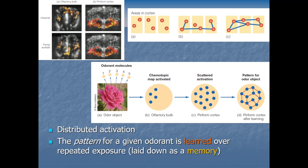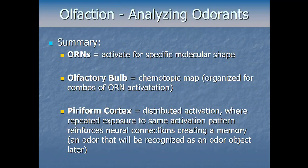If you smell something for the first time, you'll have a perceptual experience but won't be able to identify it — the activation pattern is new. But repeat exposure a lot and the pattern for a given odorant is learned over repeated exposure and laid down as a memory in the piriform cortex. For something smelled a hundred times, like bacon cooking, reactivating that pattern makes it easy for the brain to recognize it and associate it with other bacon-related activity — the word, the appearance, positive associations.